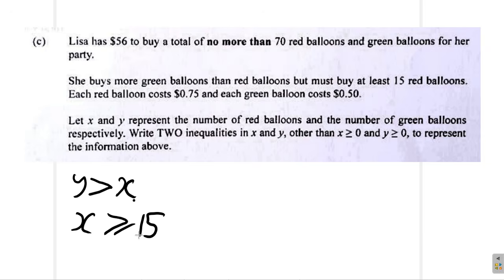They give the cost of each balloon. They say she has $56 to buy no more than 30 red balloons. So X must be not more than 30. Must be less than 30. Well, 30 is no more than 30, so it can be less than or equal to 30. Oh, it's 70. No more than 70 red balloons. So it's 70, not 30. That means 70 or less.